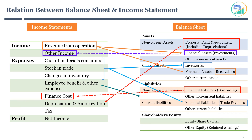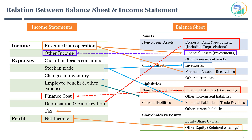Finally, total income minus expenses gives you profit before tax. After subtracting taxes, you get the net income of the company. A part of net income gets added to the company's retained earnings, also known as shareholders equity.